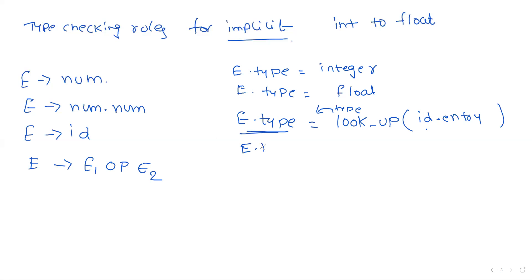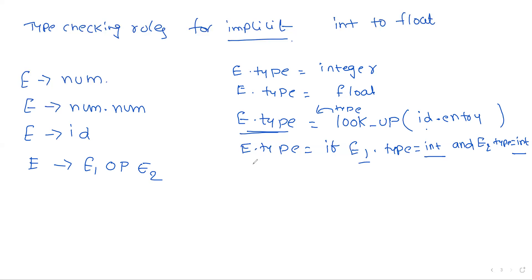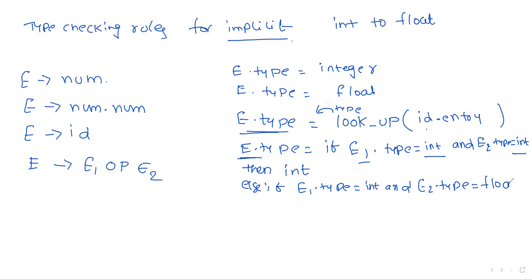Once the type is received: E.type = integer if E1.type = integer and E2.type = integer, then the type of E is also integer. If E1.type = integer and E2.type = float, the highest type is float, so the result type is float.